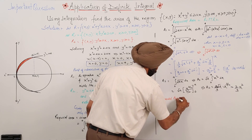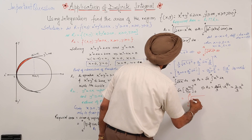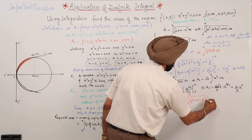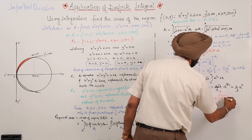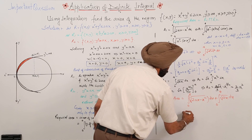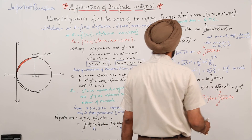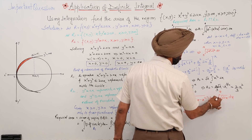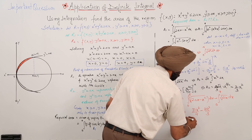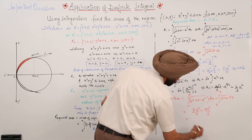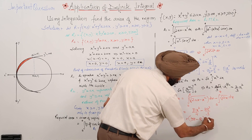Therefore the required area = A1 - A2 = πa²/4 - 2a²/3 = (3π - 8)a²/12 square units.